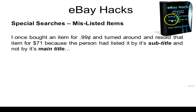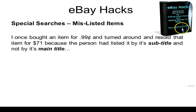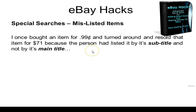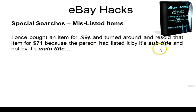Here we have a product called 'eBay Hacks.' The main title is 'eBay Hacks.' If somebody was looking for this product, they would type 'eBay Hacks' — they probably would not type 'Deal Getting Hacks' or 'Advanced Tips and Tricks for Getting Great Deals and Making Money on eBay.' They're going to type in the main title of the item. For this particular item I found, I typed in the subtitle 'Deal Getting Hacks' in quotation marks, found it at $0.99, and snagged it.